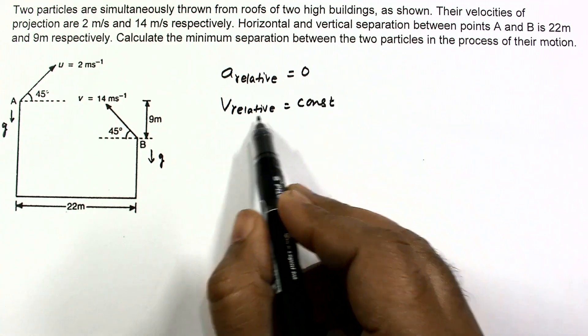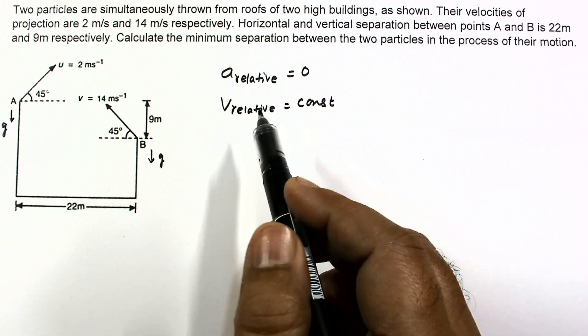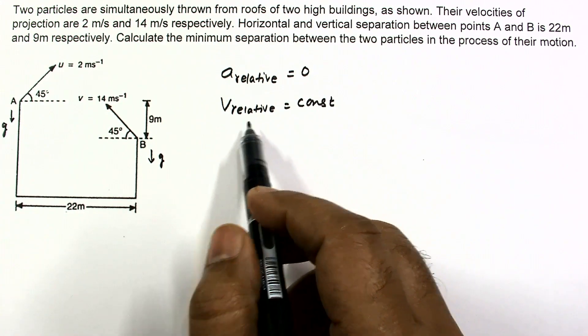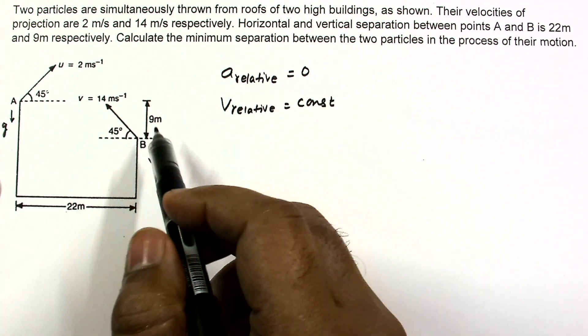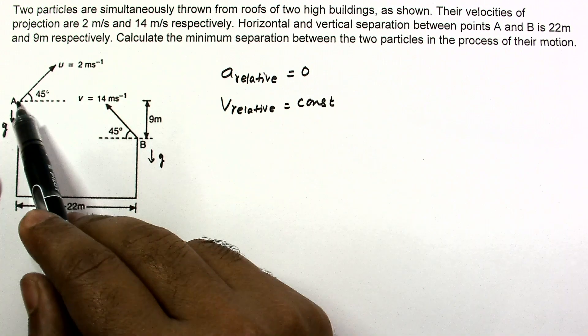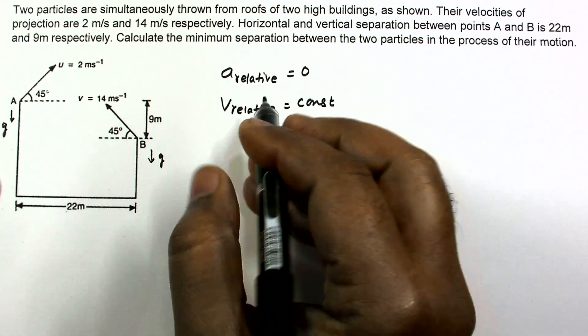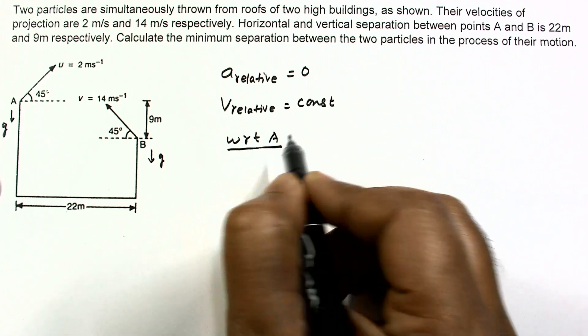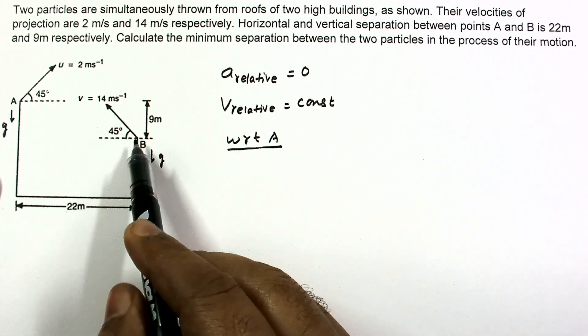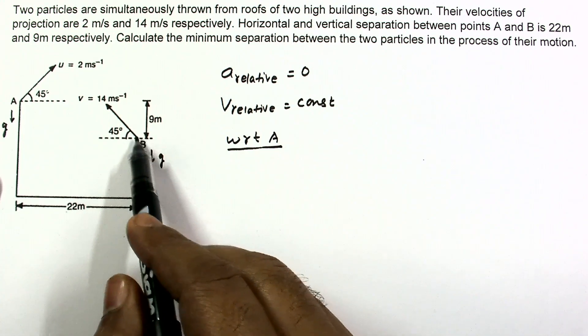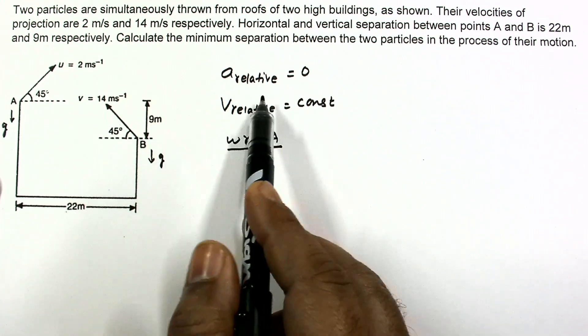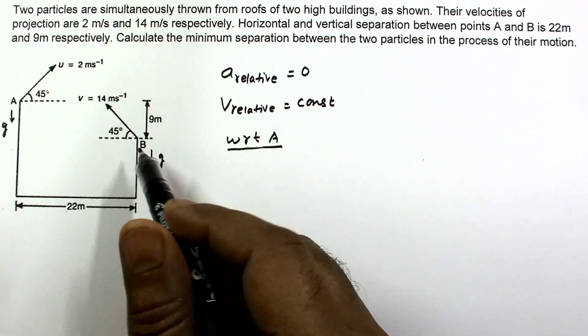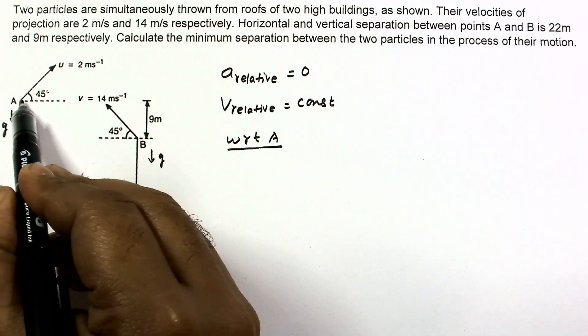In this type of situation it is better to solve by a relative method for minimum separation. Let us calculate v_relative. Let us take A at rest. I am doing with respect to A. I am calculating velocity of B with respect to A and that velocity will remain constant with time since a_relative is 0.